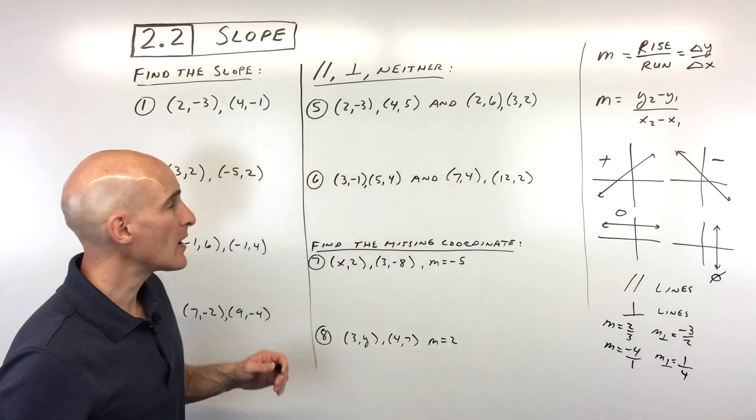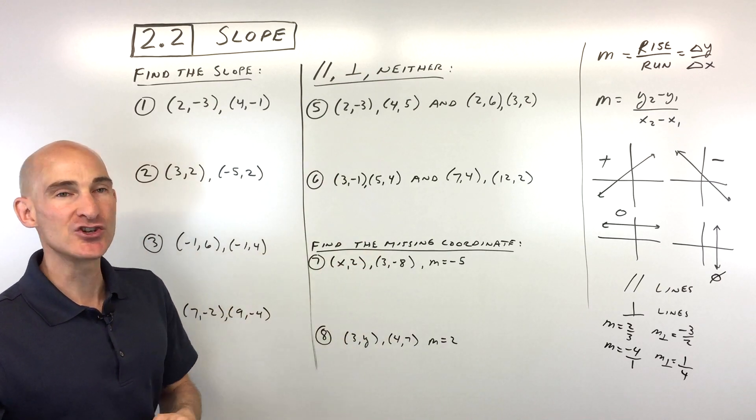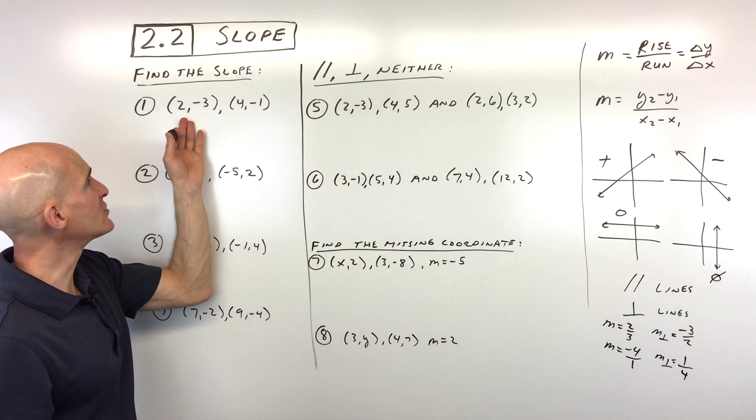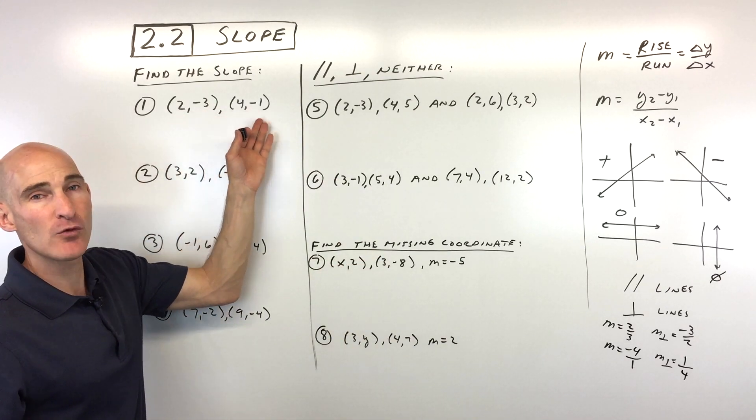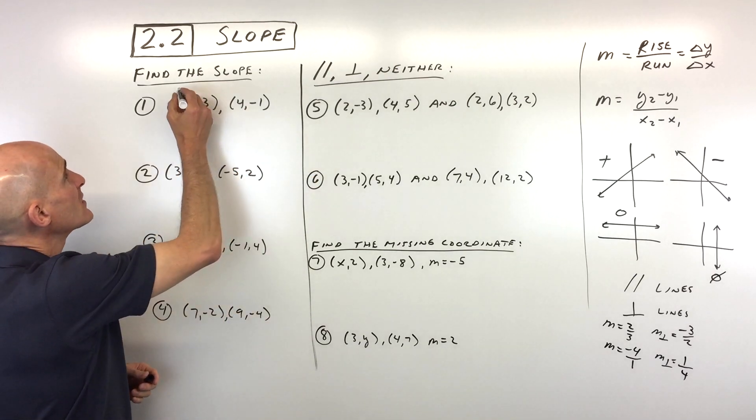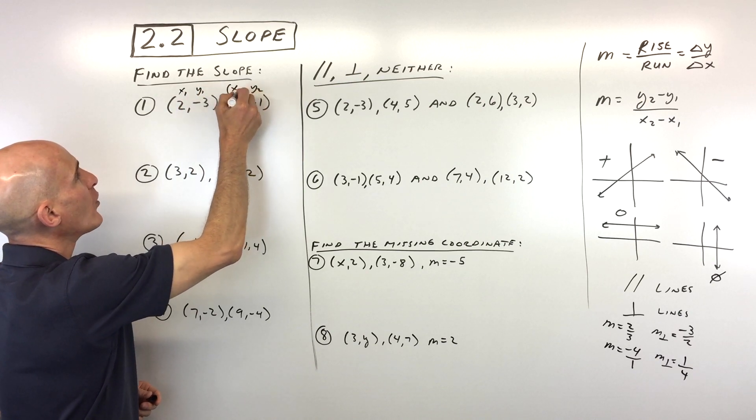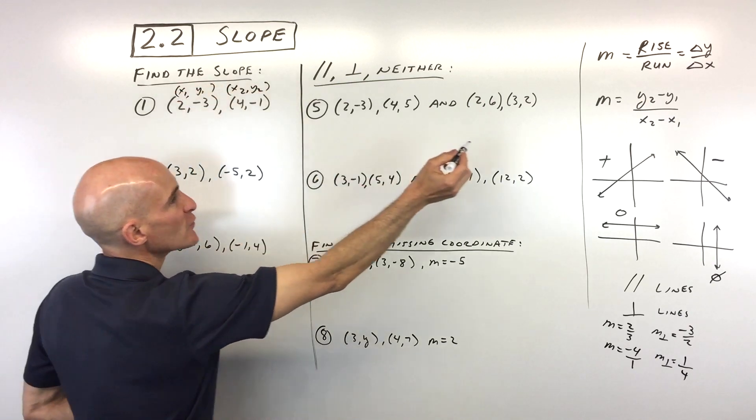Okay, let's jump into some examples. Go ahead and pause the video, see if you can do some of these. We're going to start with some simple ones that get a little bit more challenging. So number 1, we've got (2, -3) and the point (4, -1). What's the slope of the line between those two points? Some students, what they like to do is just write x1, y1, and x2, y2 above the point, just to kind of help them when they're using this formula right here.